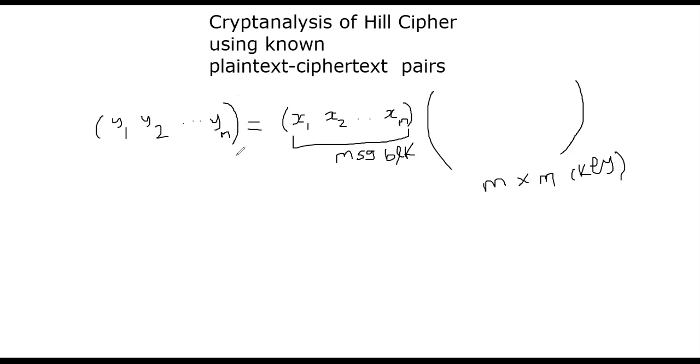So the question is, is this secure? Is the Hill cipher secure? One possibility is to try to brute force this matrix m by m matrix. That may not be a good idea. There are so many possible matrices you could think of. There are 26 power m square possible matrices and a vast majority of them will be invertible. Therefore, that's going to take a lot of time for you to brute force that.